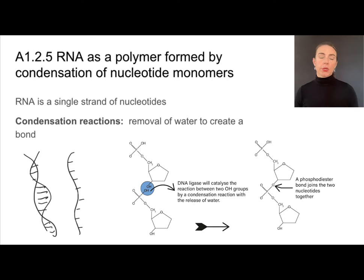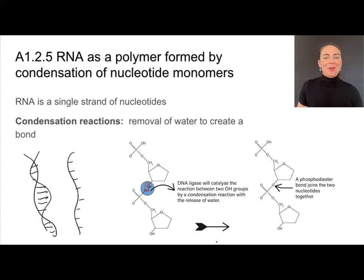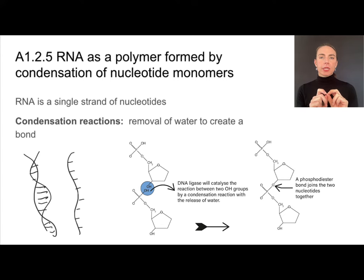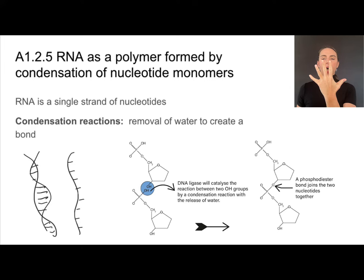In a condensation reaction between nucleotides, water is removed from an OH group on the phosphate and a hydroxyl group on the sugar. Removing two hydrogens (H₂) and one oxygen (O) leaves one oxygen shared between the phosphate group and the pentose sugar, creating the covalent phosphodiester bond. As a practical rule: to join five nucleotides together, you need to remove four water molecules.